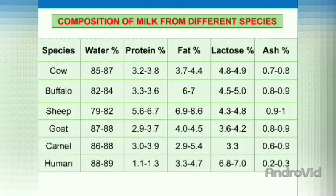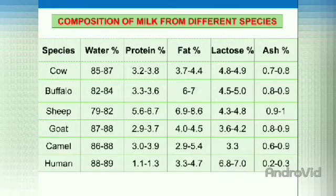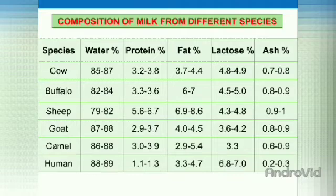Next is the composition of milk from different species. In that table we can see the species of different livestock and their composition of milk. The first species is cow. In cow's milk, the water percentage is 85 to 87%, protein 3.2 to 3.8%, fat 3.7 to 4.4%, lactose 4.8 to 4.9%, and ash 0.7 to 0.8%.